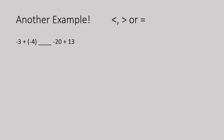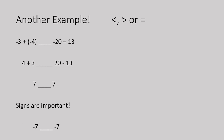Our last example: negative three plus negative four, and negative 20 plus 13. On the left, both signs are the same, so we find the sum: three plus four equals seven. On the right, the signs are different, so we find the difference: 20 minus 13 equals seven. Now the signs: on the left, a negative plus a negative gives an even bigger negative — negative seven. On the right, 20 negatives and 13 positives means more negatives — also negative seven. Negative seven equals negative seven.